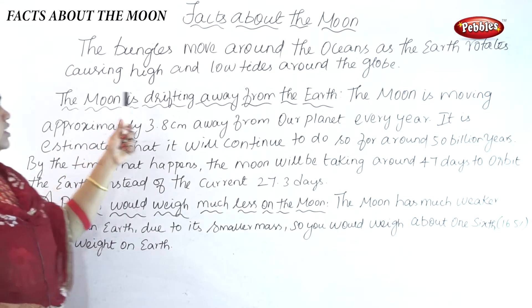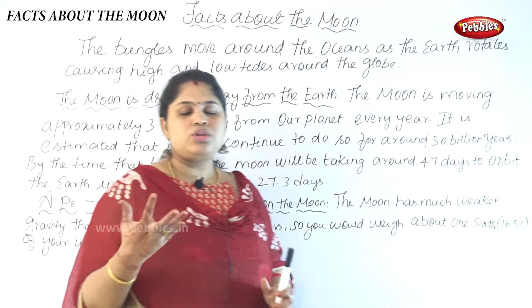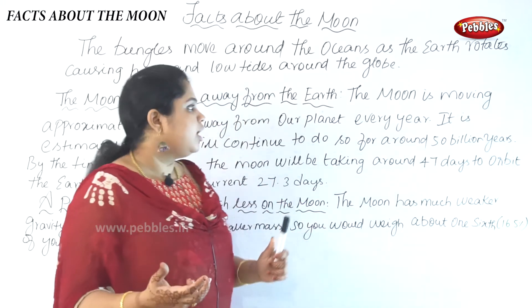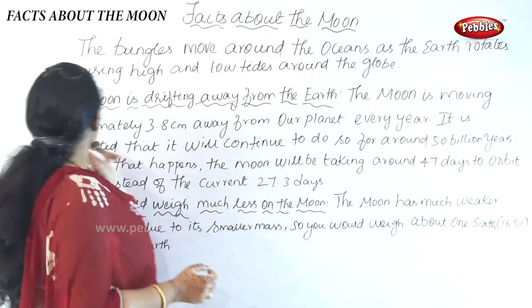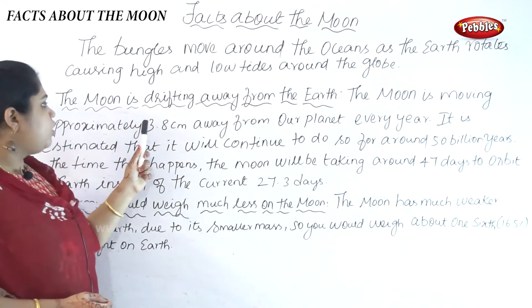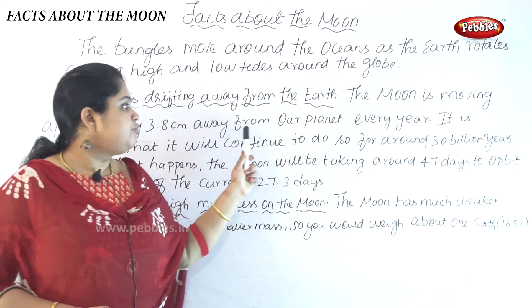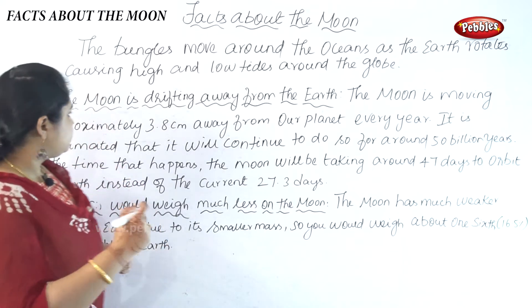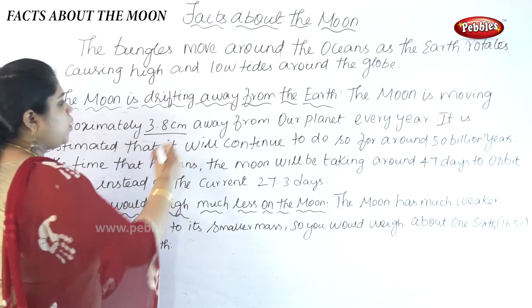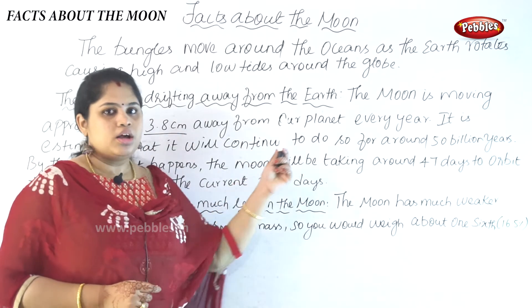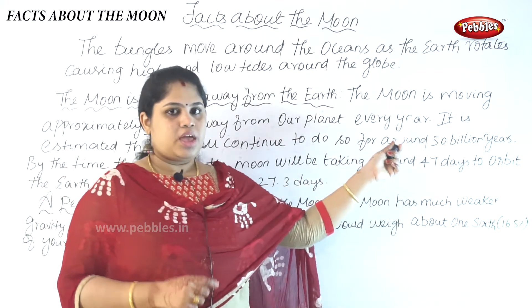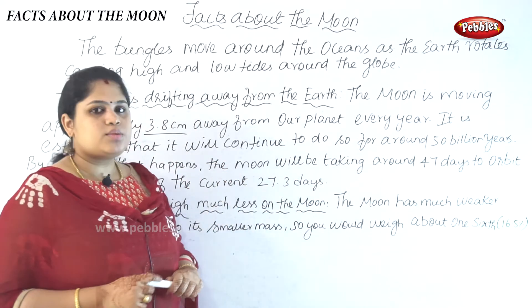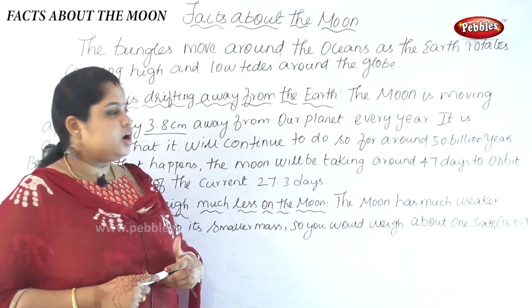The next point is: the moon is drifting away from the earth. The moon is moving approximately 3.8 centimeters away from our planet every year.